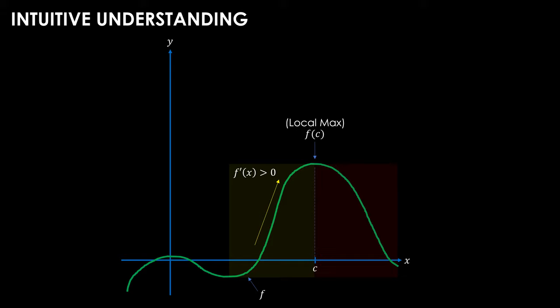If we look on the right-hand side of the function, just after the point c, we'll see that the function is decreasing, which means that the gradient must be negative, and if I were to take the derivative of any point along this segment, it must be less than zero.